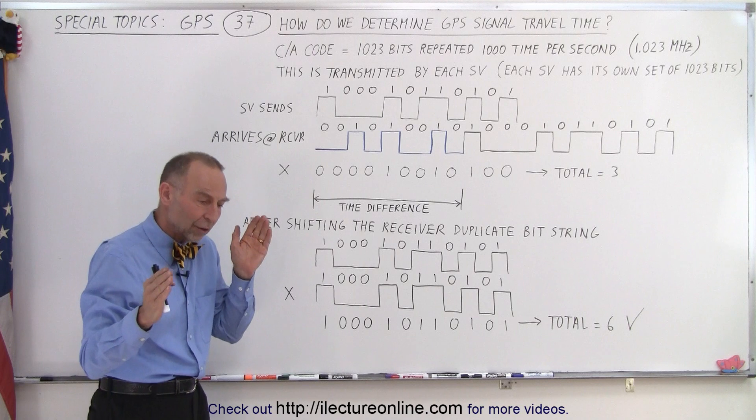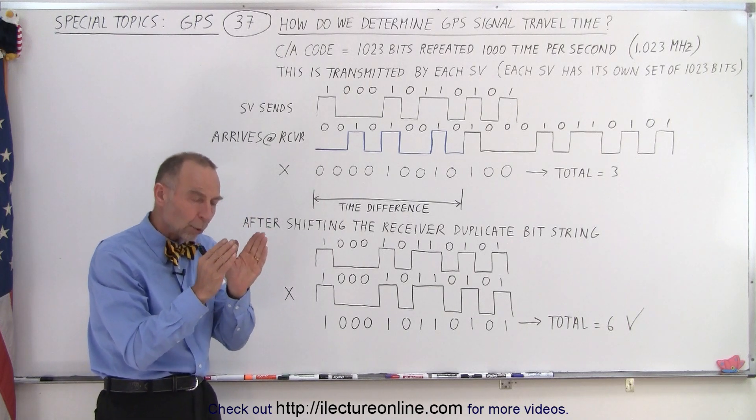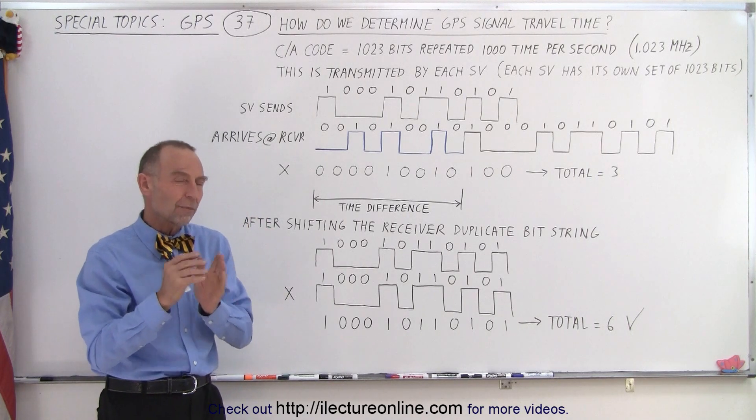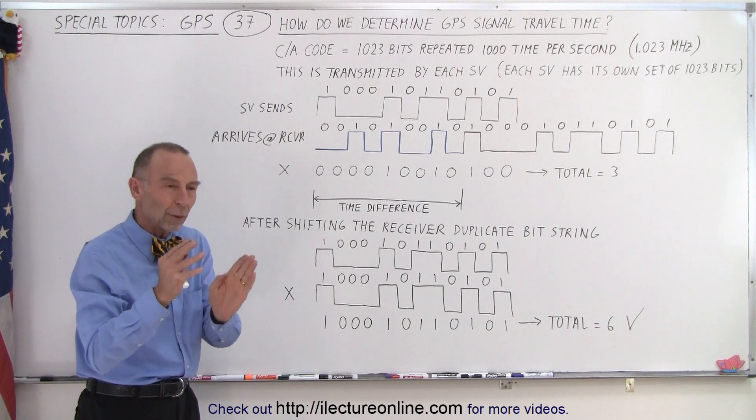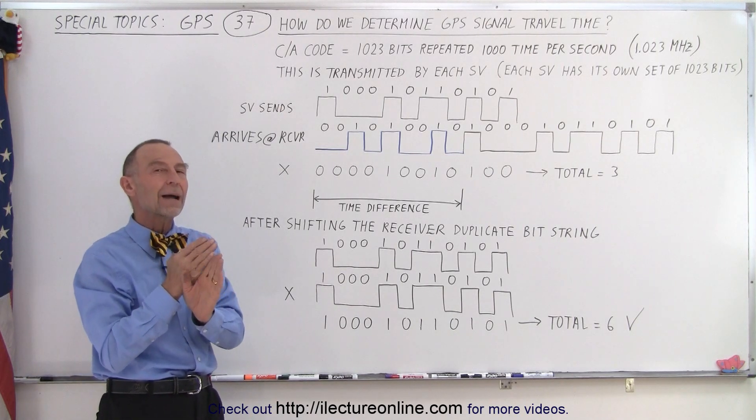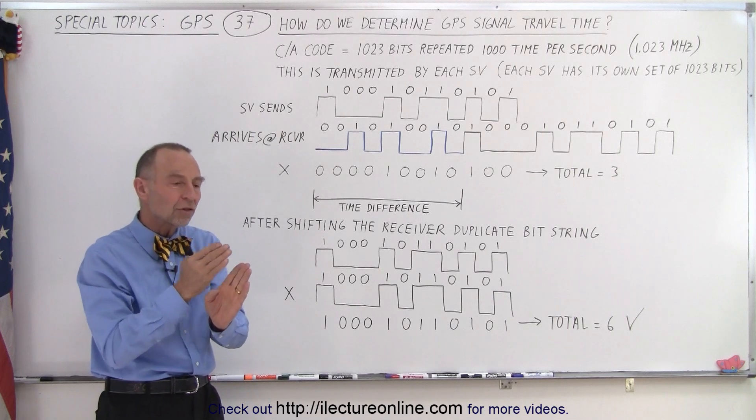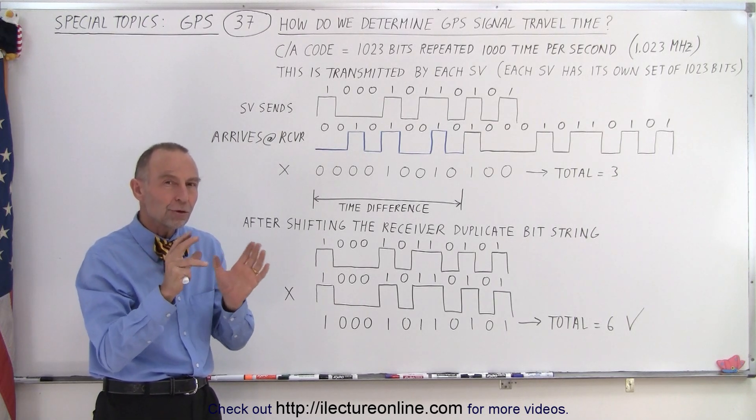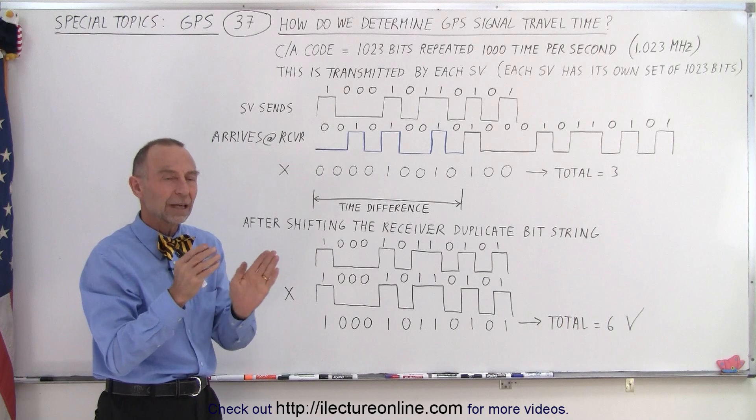That means that we're now lined up in a window of about three tenths of a millisecond and then once we know that alignment, we know about approximately what the time difference should be. Then we begin to shift to come up with the other few tenths of a millisecond in order to get that exact alignment.